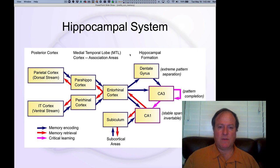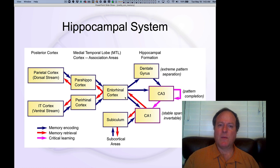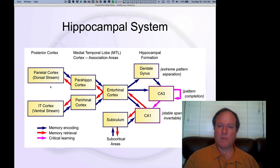This is a diagram of the hippocampal system and how it is interconnected with other areas. We looked at this in chapter five. The key point is that the hippocampus sits on top of the cortex. We have the parietal cortex dorsal stream, where all the spatial information about where you are in space comes in through this pathway, and the ventral stream handles object recognition and semantic knowledge.